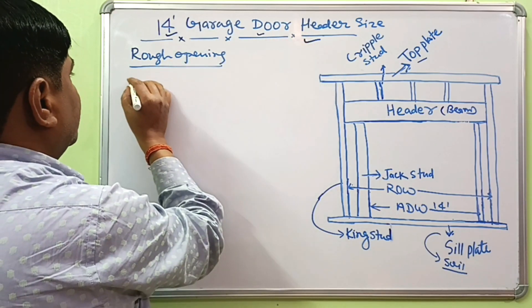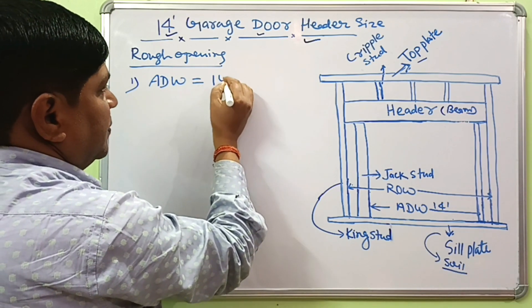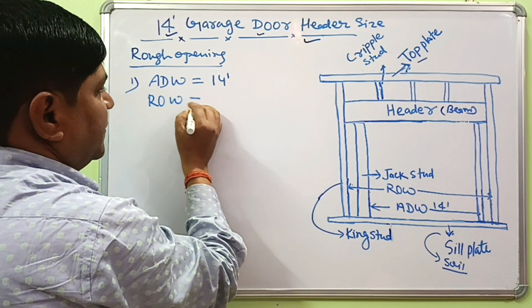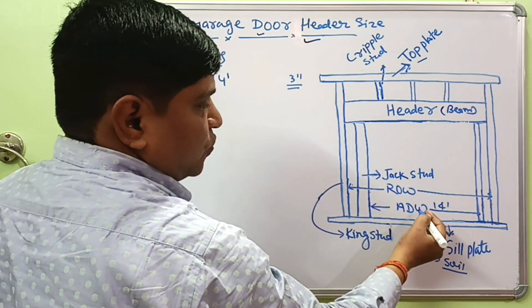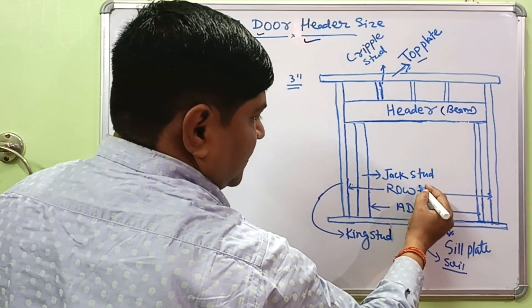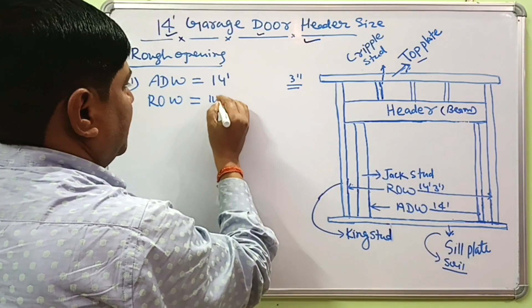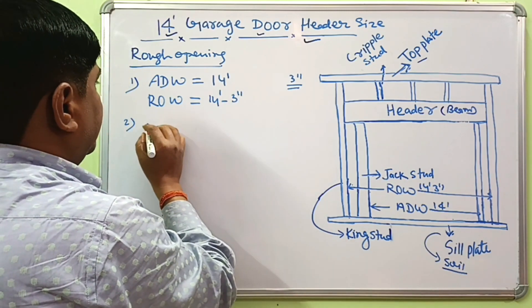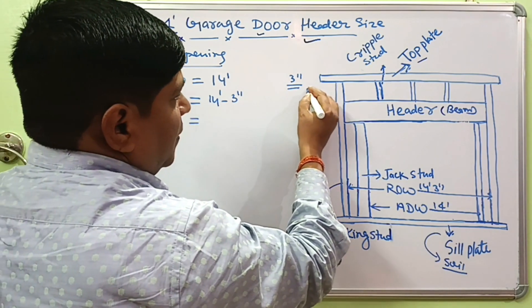What will be the rough opening width? It will be about 3 inches more than the actual door width. That's why the rough opening width is about 14 feet 3 inches. The actual door height for most garage doors will be about 7 feet.